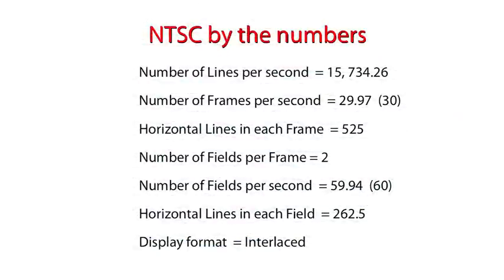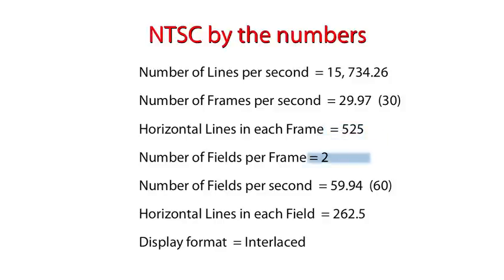Take a look at this chart called NTSC by the numbers. It shows most of the important information about NTSC composite sync. The very first line tells us that there are 15,734.26 horizontal lines per second, that there are 29.97 or 30 frames per second, and that each of those frames consists of 525 lines, but that frames are broken into two halves or fields.